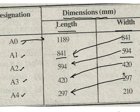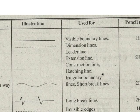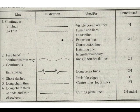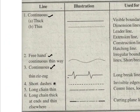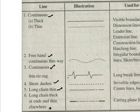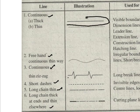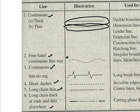Now let's see the different types of lines used in engineering drawing. The commonly used lines are given in the table below. The different types are: continuous line, freehand continuous thin wave, continuous thin zigzag line, short dashes, long chain thin, and long chain thick at end and thin elsewhere lines. The illustration of these lines is shown in a separate column. The continuous thick line and the continuous thin line are shown as examples, and so on.